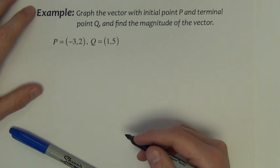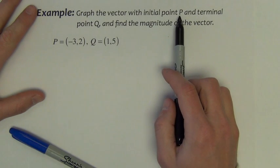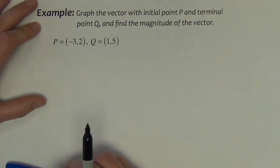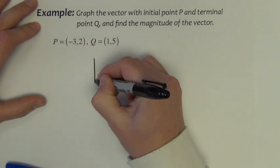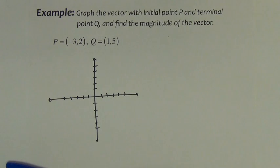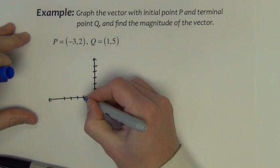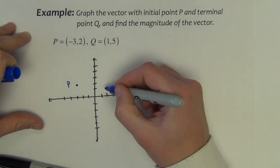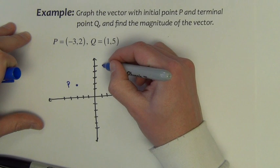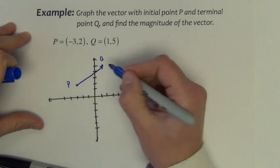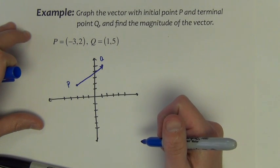This first example says graph the vector with initial point P, terminal point Q, and find the magnitude of the vector. Let's sketch a graph. We're starting at the point negative 3, 2. That's point P. We're going to end at the point 1, 5. That's point Q. There's my vector PQ.